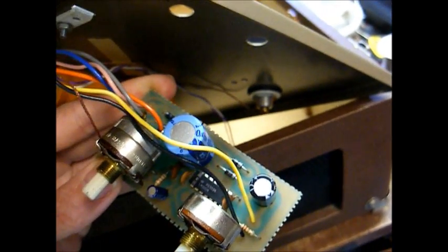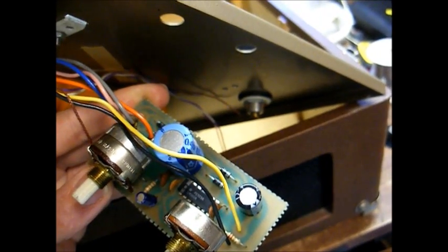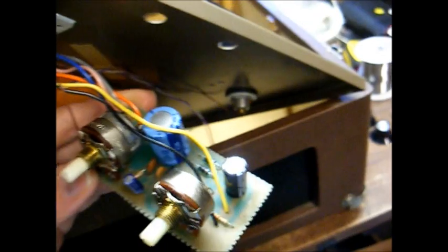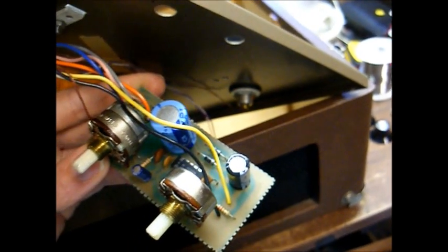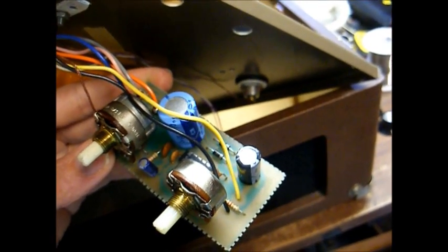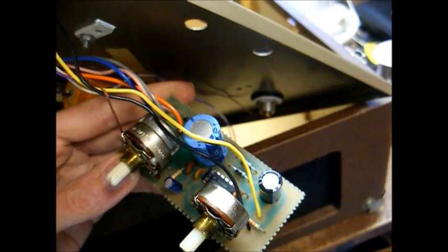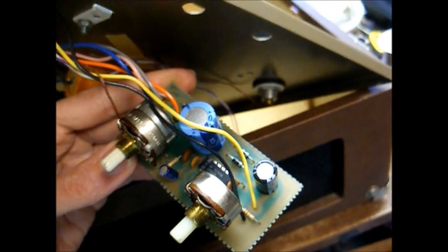In fact, the Hamilton record players use the same IC, but the difference in this one and the Hamilton models is the Hamilton units have a transistor ahead of the IC for a preamp stage. On this one, they're just feeding the output of the cartridge directly into the IC.